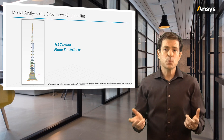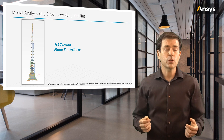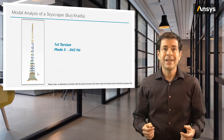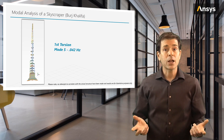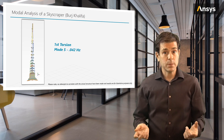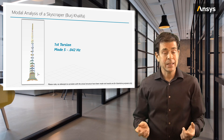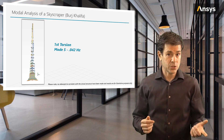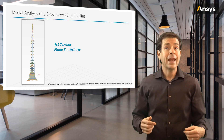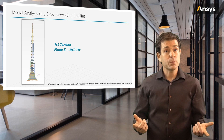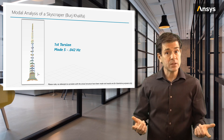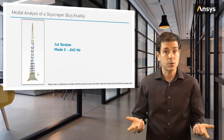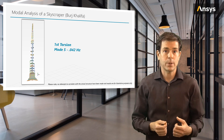This brings us back to the significance of modal analysis to the design. The building must not only be stiff to minimize bending, it must be stiff torsionally to minimize rotation. The aerodynamics of the building must be considered so as not to excite this mode of deformation or any modes of deformation.